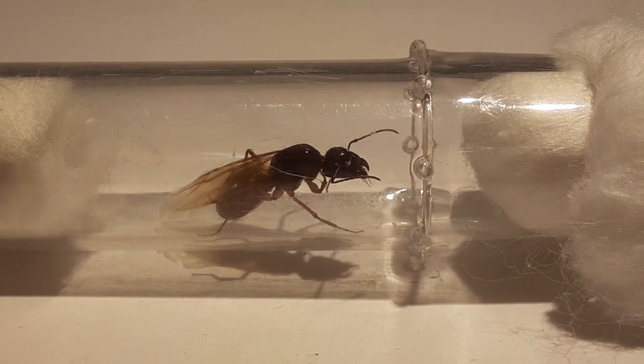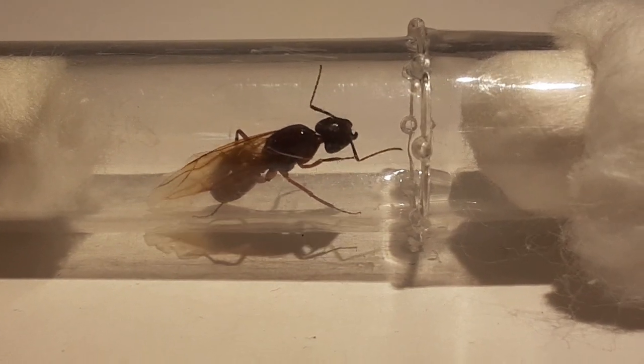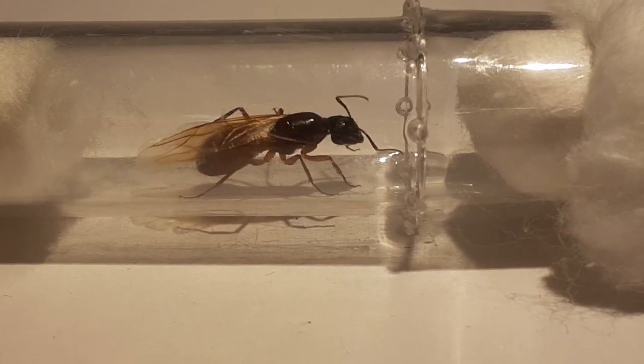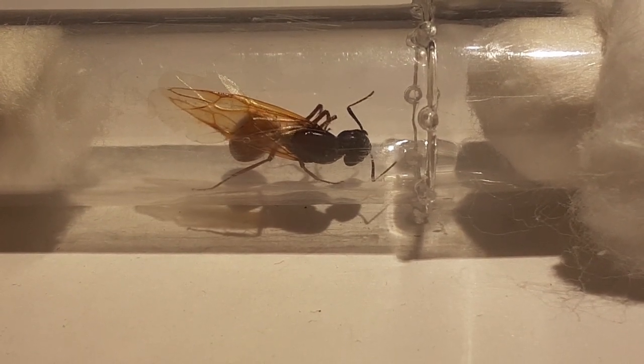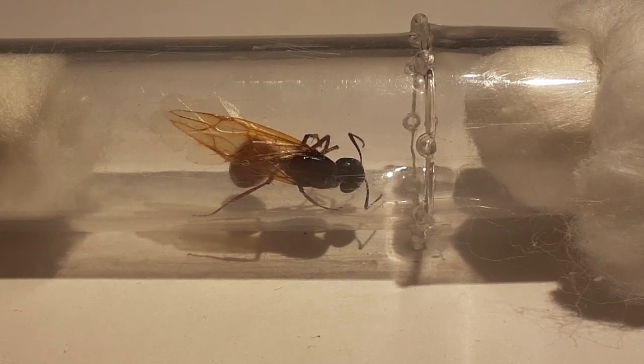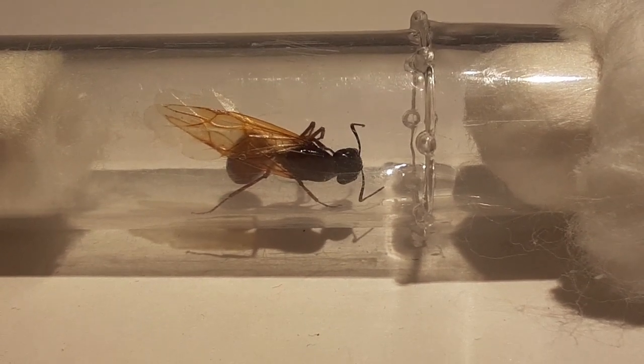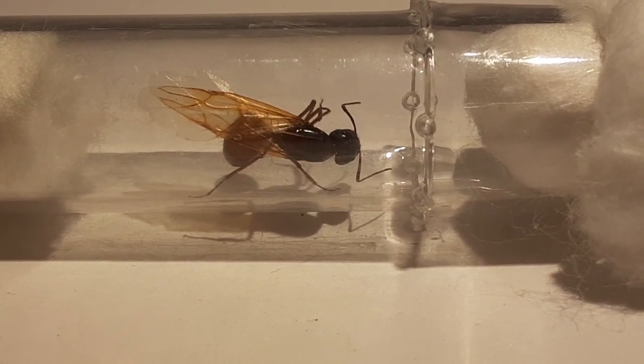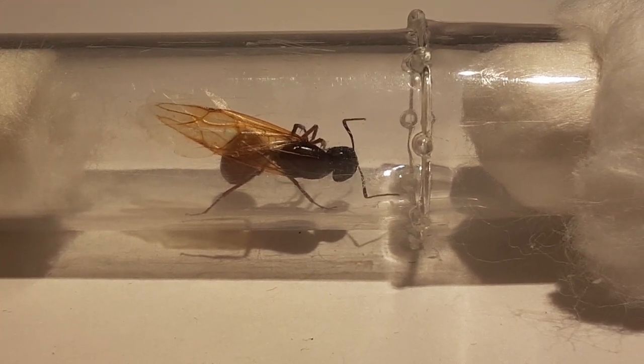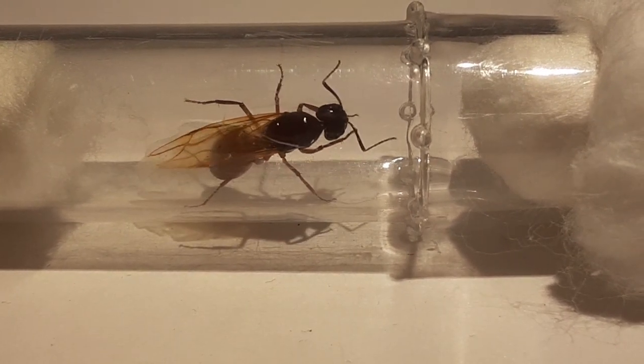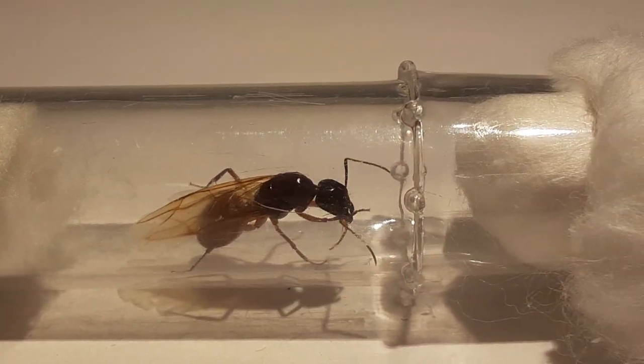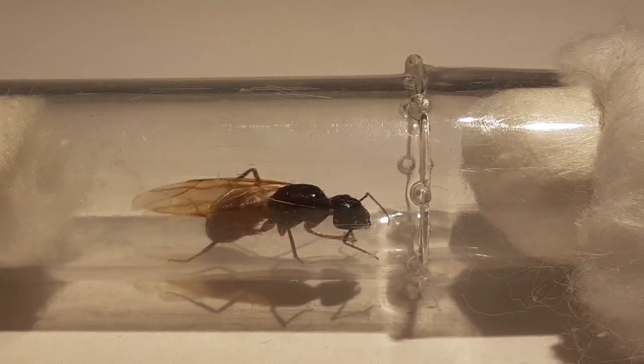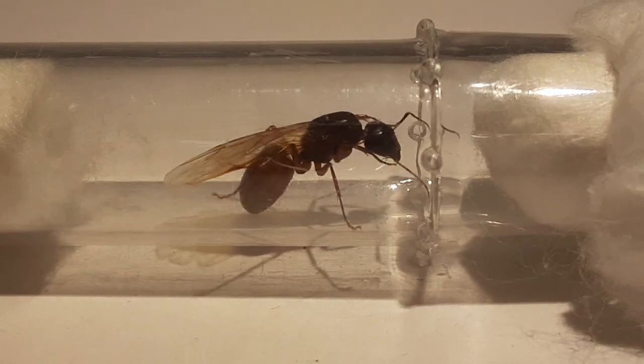She definitely looks like some sort of Camponotus because of how large she is. This is quite a large queen, which is really commonly found in Camponotus, especially in North America. This species has kind of a darker head and thorax, and then the gaster is kind of reddish.